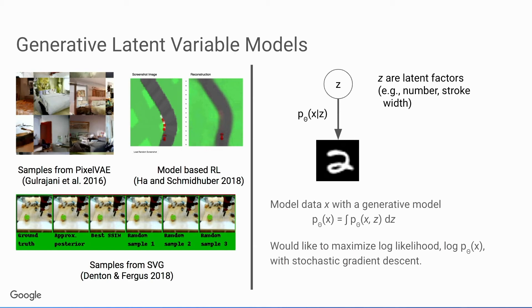At the core of these models is a latent variable Z. You can think of these as representing latent factors — for example, if we were modeling handwritten digits, it could be the number or the stroke width. The model samples these latent factors, then passes them through a decoder to generate a high-dimensional image. Our goal is to model this data with this generative model, and we can compute the likelihood by integrating out the latent factors from the joint distribution.